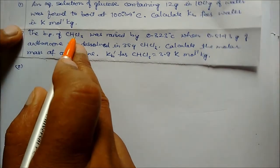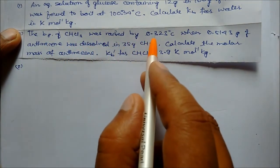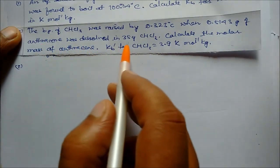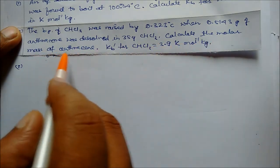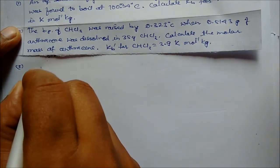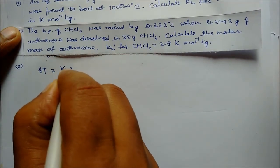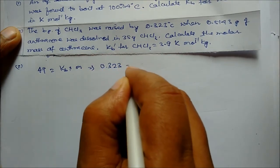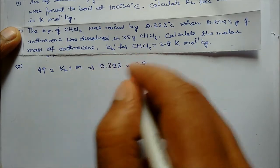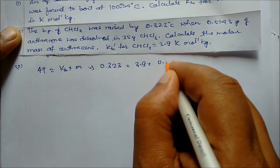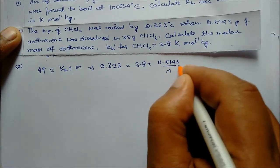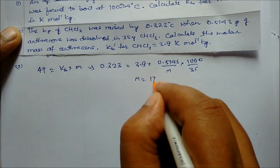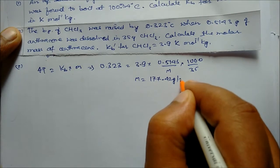Next problem: The boiling point of chloroform was raised by 0.323°C when 0.514 grams of anthracene was dissolved in 35 grams of chloroform. Calculate the molar mass of anthracene. Using delta T = Kb × m: 0.323 = 3.9 × (0.514 / M) × (1000 / 35). Solving, the molar mass = 177.42 grams per mole.